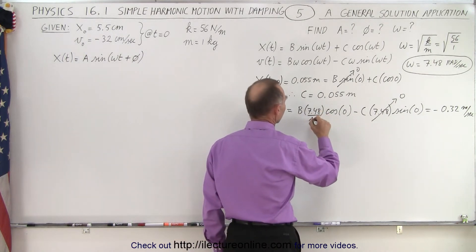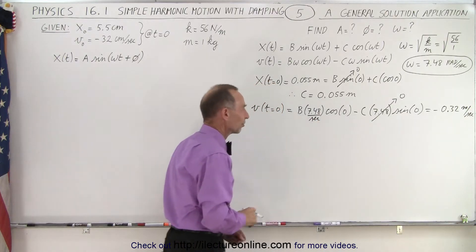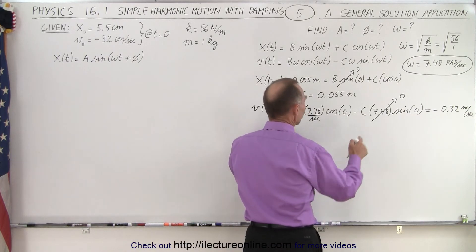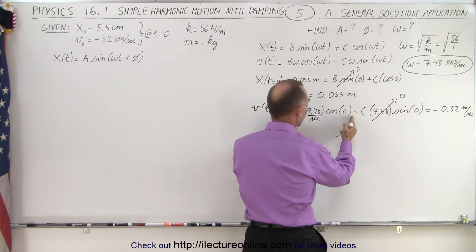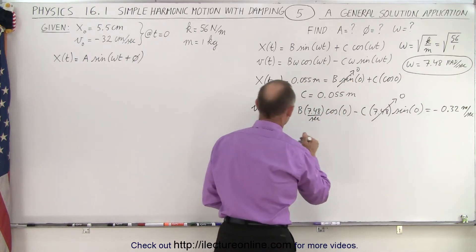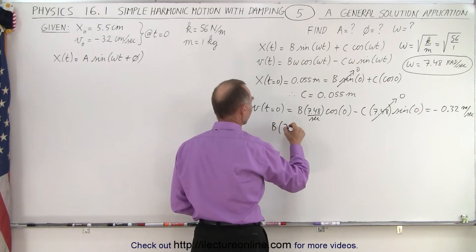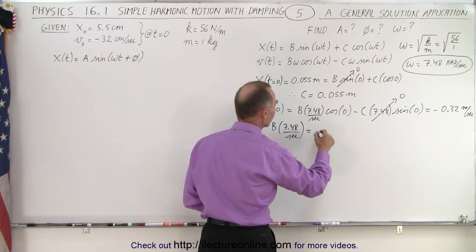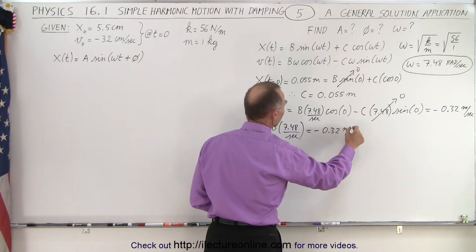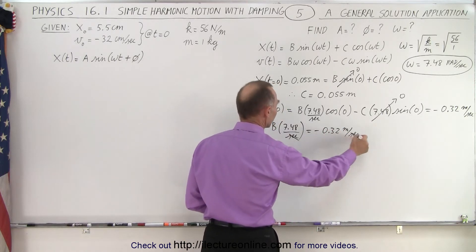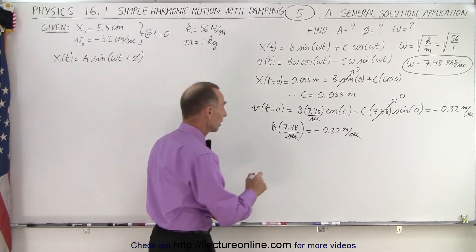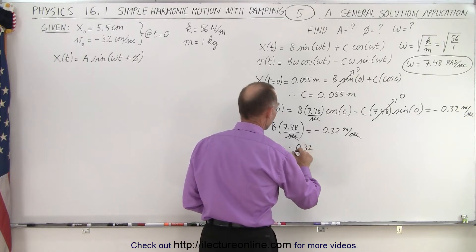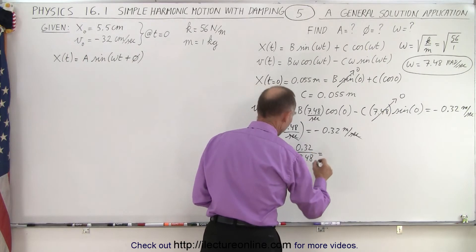Let's check the units. That would be per second, radians per second, so we have to have the per second there as well, otherwise the units don't match. Which means that B times 7.48 per second is going to be equal to minus 0.32 meters per second. Notice the seconds cancel on both sides of the equation, so we end up with meters.